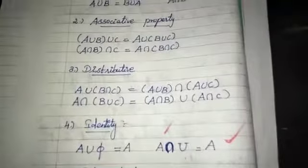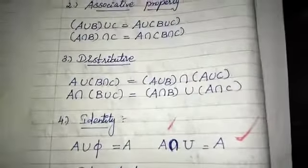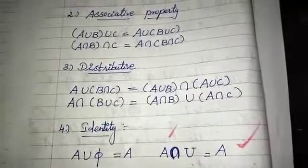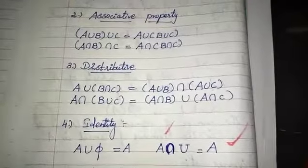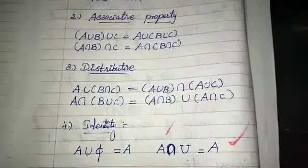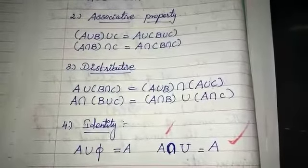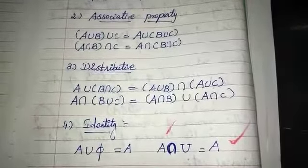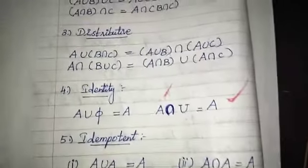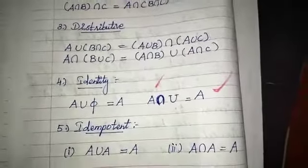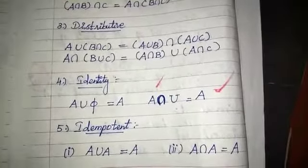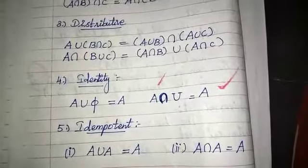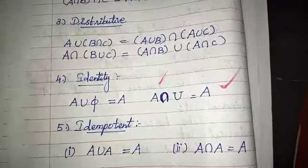Identity property: A union φ equals A, and A intersection universal set U equals A. The null set φ is the identity for union, and the universal set U is the identity for intersection. Idempotent property: A union A equals A, and A intersection A equals A.